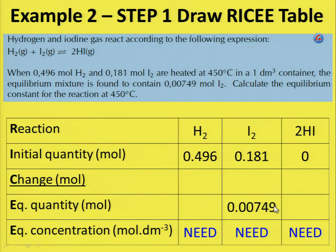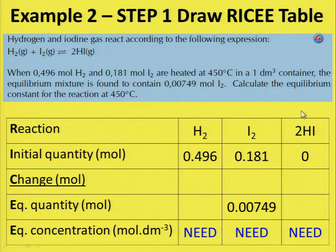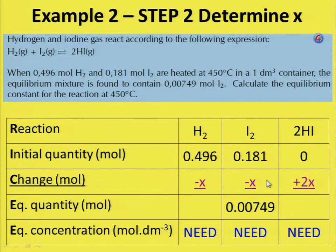The other given quantity in the question is 0.00749 moles of iodine, which is at equilibrium. To calculate the equilibrium constant you need the concentration of your reactants and the concentration of your product at equilibrium — you need these blue values. You can get to those values by calculating x using the stoichiometric values, which show a 1-to-1 ratio of hydrogen to iodine.